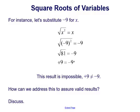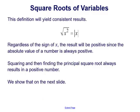So how can we address this to assure all valid results? It works if x is a positive number or 0, but how can we take care of the case where x is a negative number? Well, we can use the absolute value. This definition will yield consistent results: the square root of x squared is equal to the absolute value of x. So regardless of the sign of x, the result will be positive, since the absolute value of a number is always positive or 0. Squaring and then finding the principal square root always results in a positive number or 0.